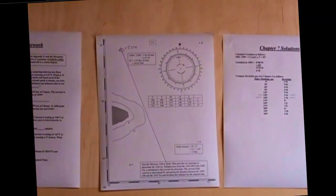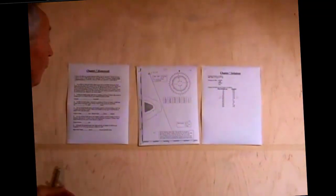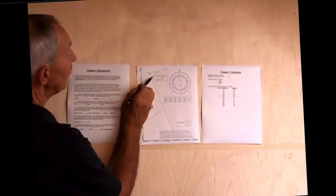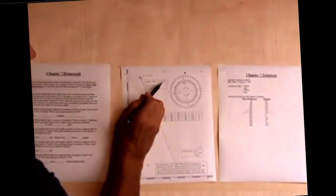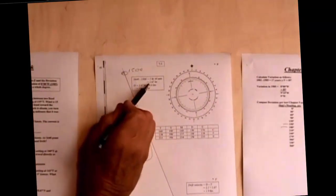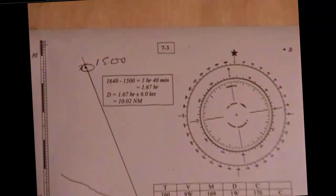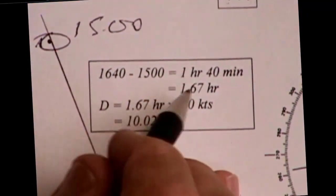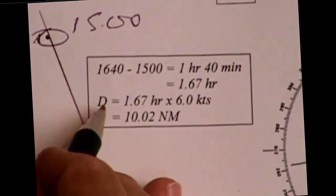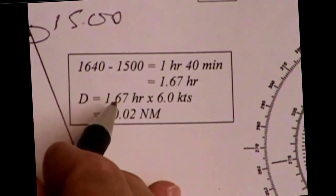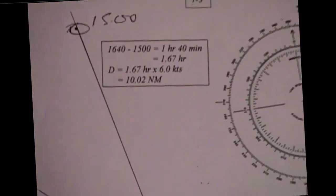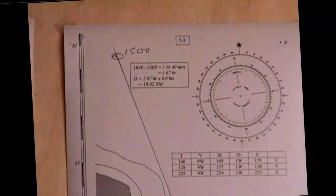This says I'm traveling at six knots, and I'm going for 1 hour and 40 minutes from 1500 to 1640. 1640 minus 1500 is 1 hour and 40 minutes, which is 1.67 hours. Distance is therefore speed times time: 1.67 hours times 6 knots equals 10.02 nautical miles.